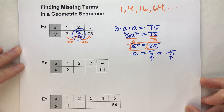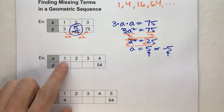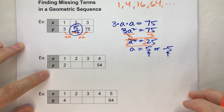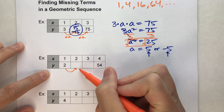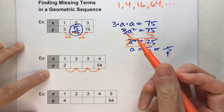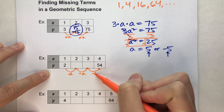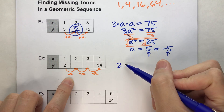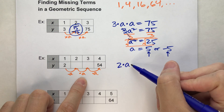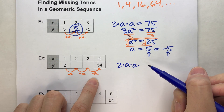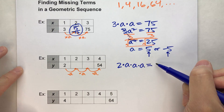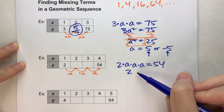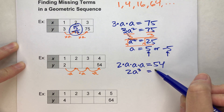Let's do another one. We have a sequence where the first term is 2 and the fourth term is 54, and we don't know the middle two terms. Just like before, we're repeatedly multiplying by the same amount — call it a — three times. So the equation is 2 times a times a times a, which is the same as 2a cubed equals 54.